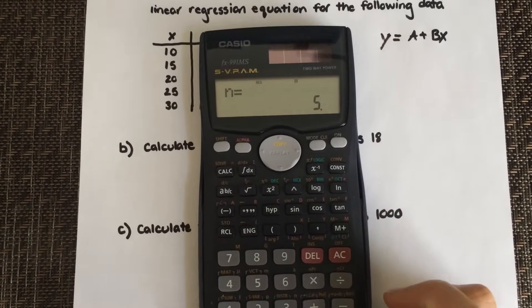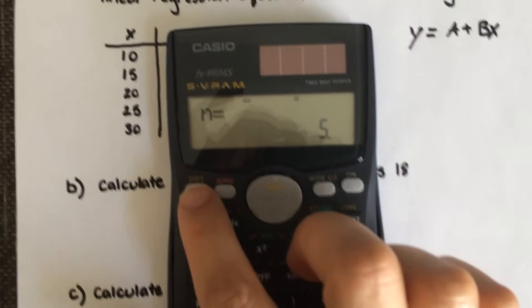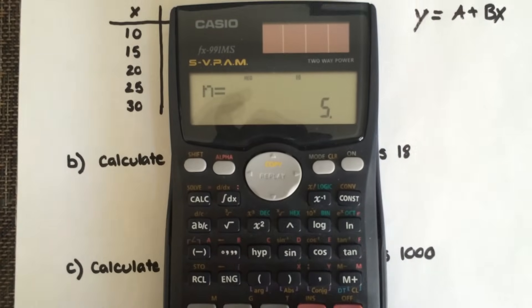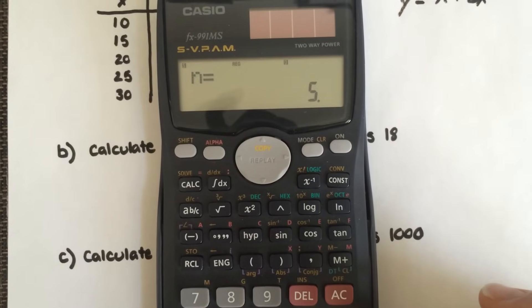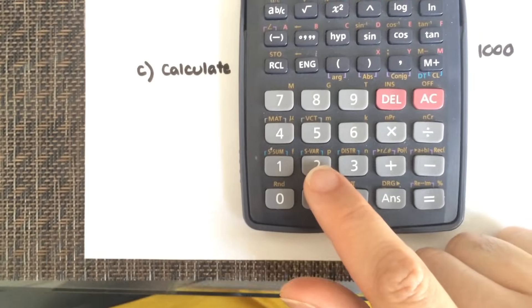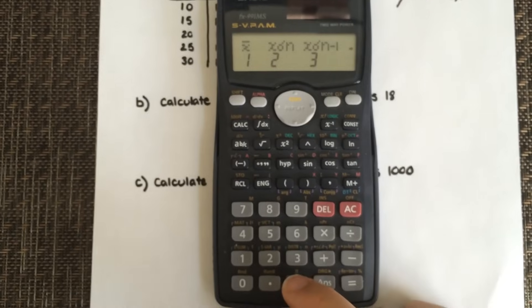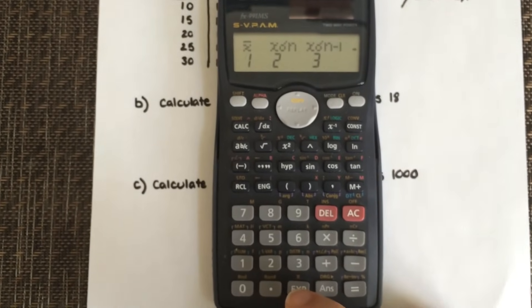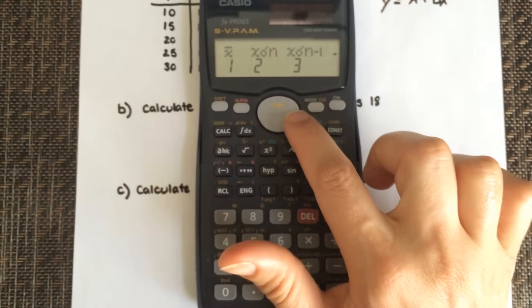So what you're going to do, you're going to go shift. So you're going to select a S variable key, which is on top of number 2. So you're going to select that, and you're going to see this screen come up. So now you're going to want to scroll with this button here.